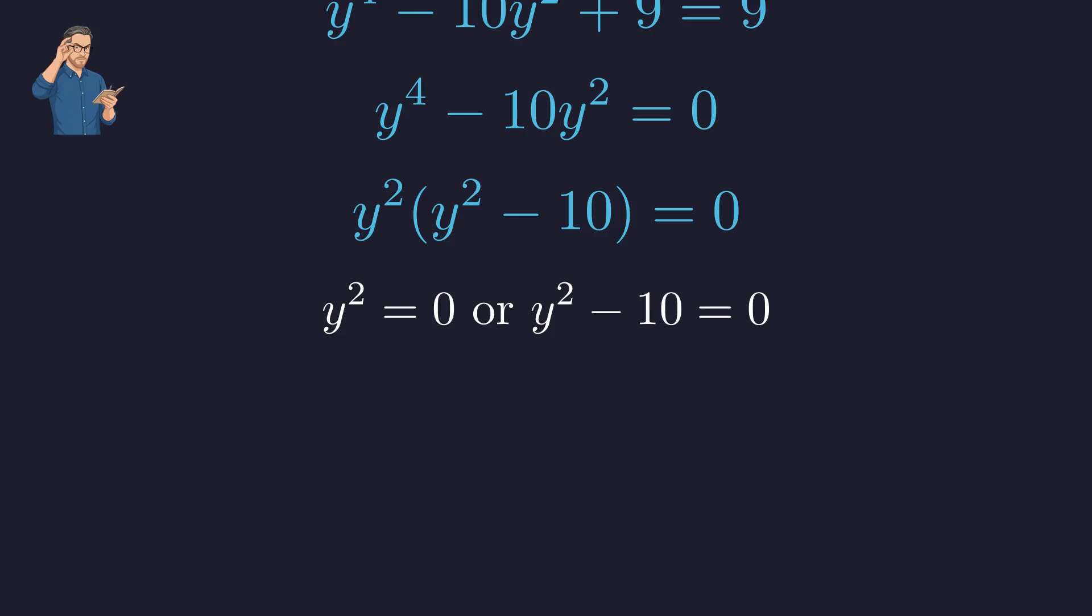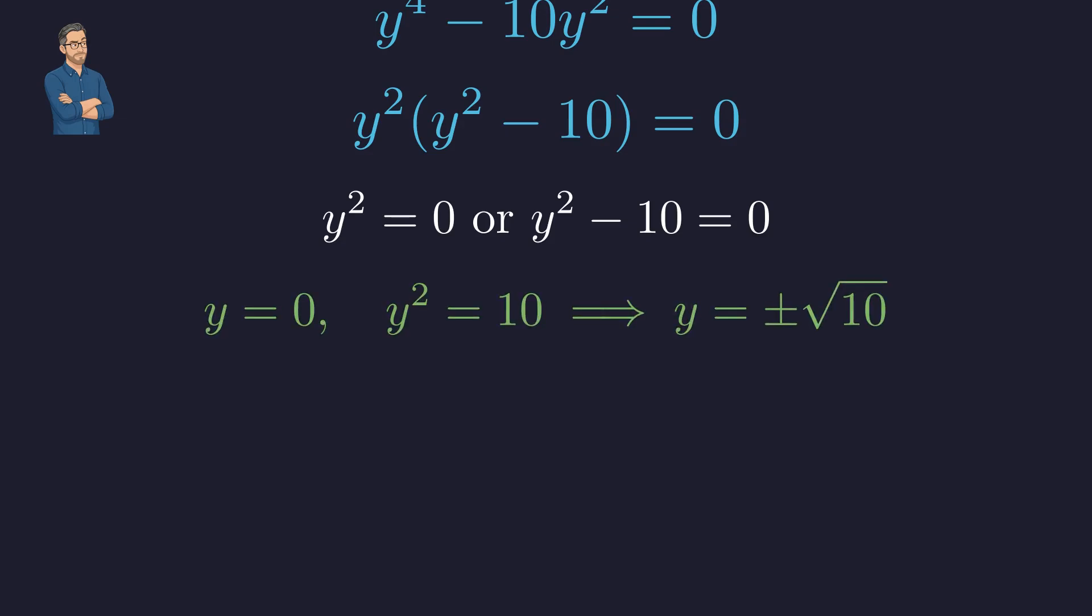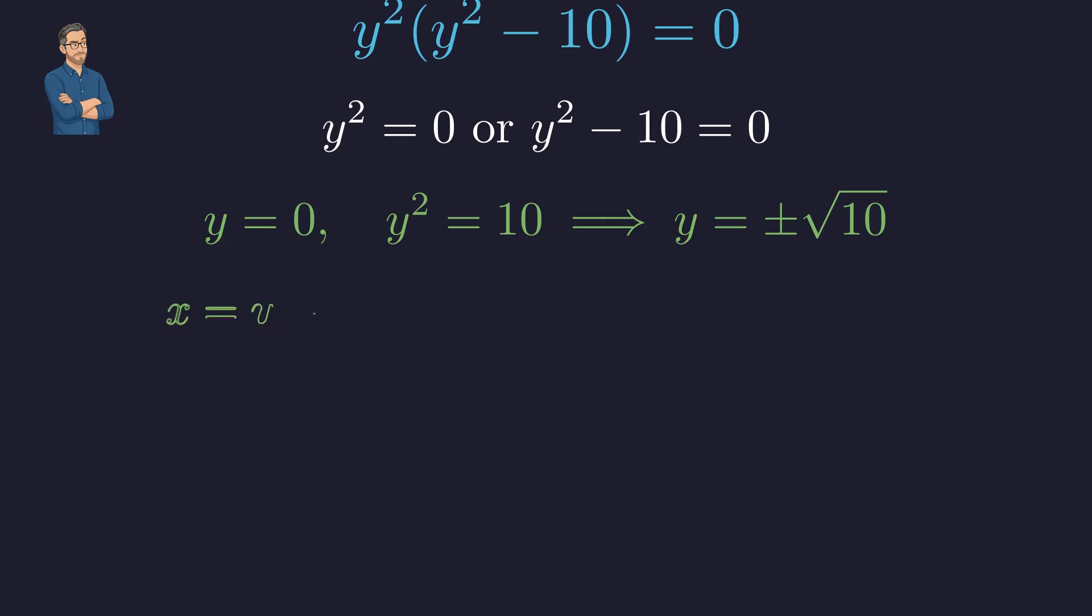By the zero product property, either the first factor is zero, or the second factor is zero. This immediately gives the solutions y = 0 and y = ±√10. Finally, substituting back using x = y - 6 gives us our three solutions.